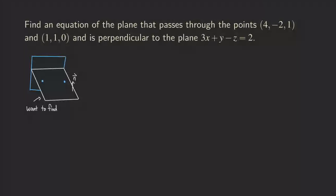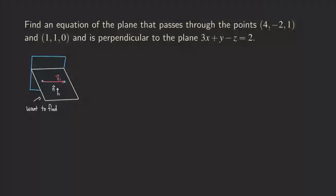How do we find the normal vector? Usually we take the cross product of two vectors lying in the plane we're trying to determine, and once we cross them we can find the normal vector. One of those vectors — V1 — is easy to find, because we already know two points in the plane. We just make a vector from one point to the other.